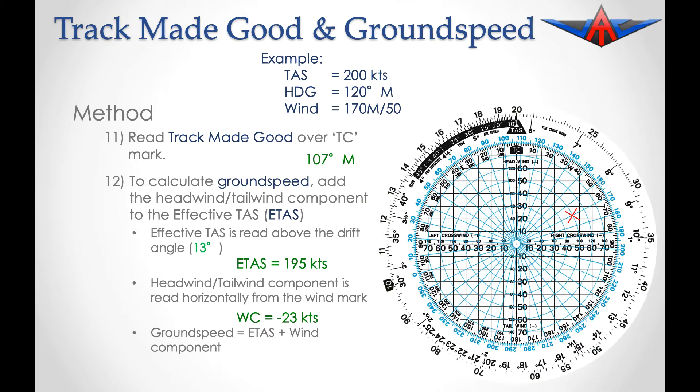Final step in the process is to add our effective TAS to our wind component. That means we add 195 knots effective TAS to the minus 23 knots of wind component, which gives us a result of 172 knots. So our track made good is 107 degrees magnetic, and our effective ground speed over the ground was 172 knots.